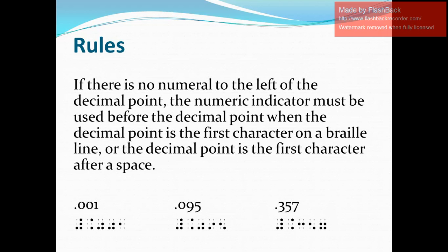Next example, we have 0.095. In Nemeth, we write the numeric indicator first, the decimal point with dots 4 and 6, and then the digits 0, 9, and 5.